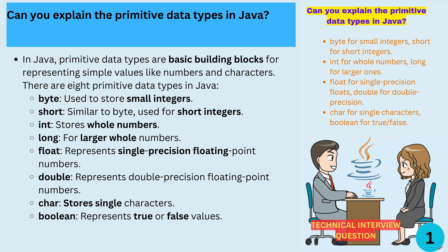Double, represents double precision floating point numbers. Char, stores single characters. Boolean, represents true or false values.